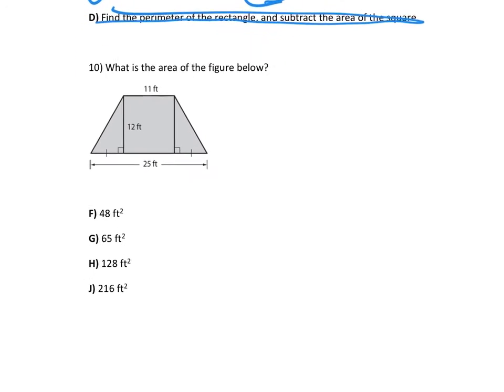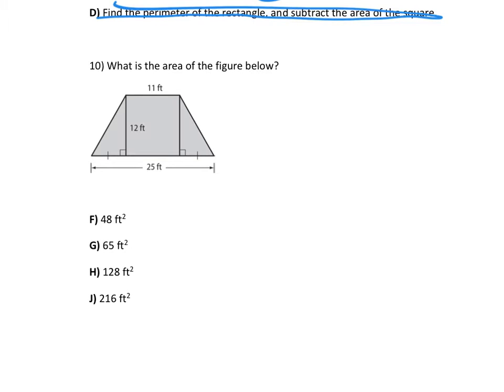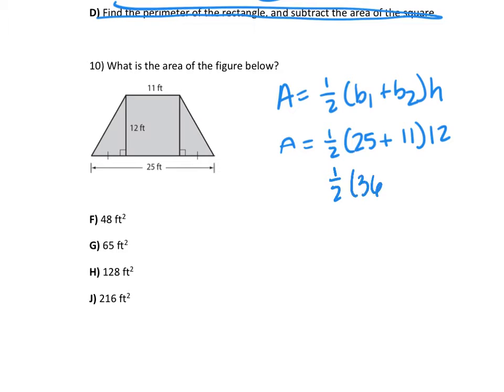Number 10. What is the area of the figure below? A lot of y'all were seeing this as two triangles and a square, and I would see it as just a trapezoid. So I would do the trapezoid formula. One half, base 1 is 25, base 2 is 11, and the height is 12. So 25 plus 11 is 36.